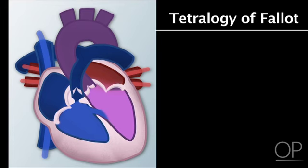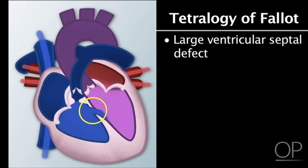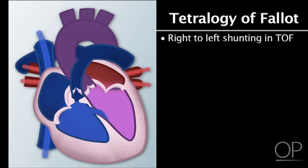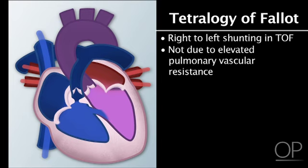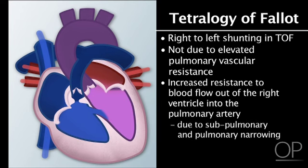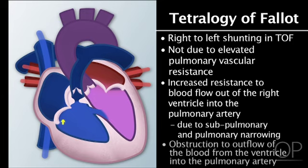Simply pulmonary and systemic vascular resistances are operative here. In the case of tetralogy of Fallot, there is a large ventricular septal defect and then narrowing at and below the pulmonary valve. The reason for right-to-left shunting in tetralogy is not high pulmonary vascular resistance — in fact, these patients have normal pulmonary vascular resistance — but rather there is increased resistance to blood flow out of the right ventricle and into the pulmonary artery due to the subpulmonary and pulmonary narrowing. So an additional reason for right-to-left shunting with a VSD is obstruction to outflow from the ventricle into the pulmonary artery.